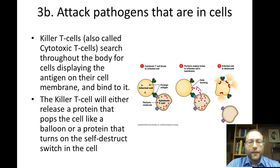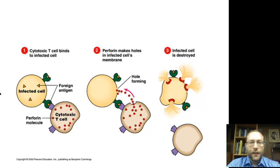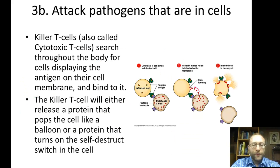The second army attacks pathogens that are inside cells. Killer T cells, also called cytotoxic T cells, go out throughout the body and search for cells infected by the pathogen. Unlike B cells, which stay in the lymph nodes and send out antibodies, killer T cells find infected cells — which display the antigen on their cell membrane — and either instruct the cell to self-destruct or poke a hole in it. When the cell is destroyed, so too will the pathogen be destroyed. This method is also used by our body to attack cancer cells.